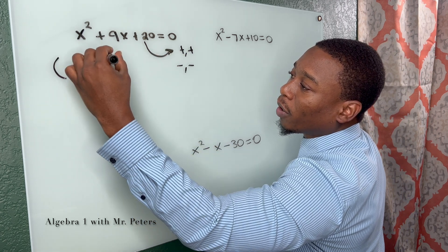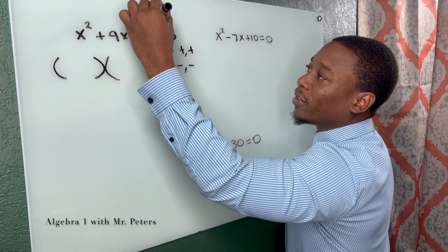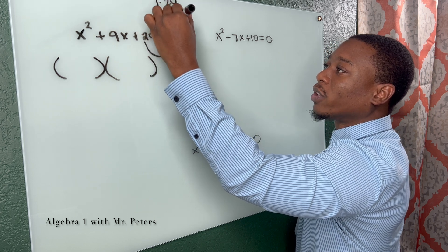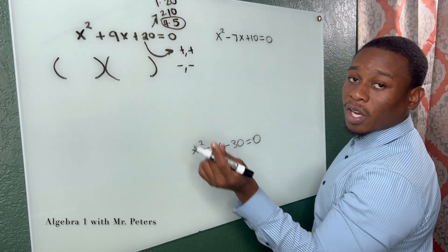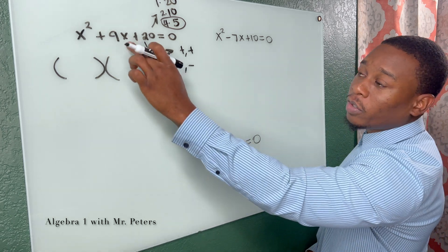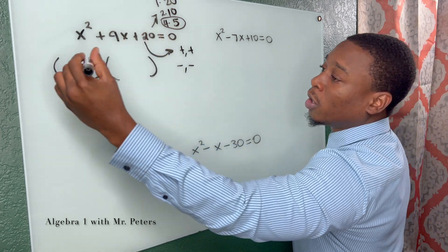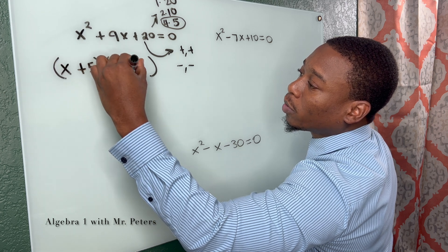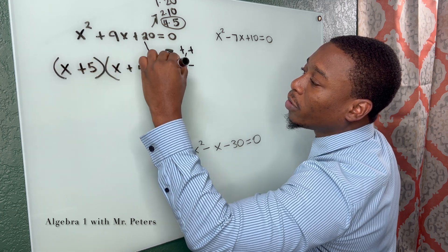Now to know whether it's positive or negative, we can look at our middle term. Because this is positive, we know both of our factors have to be positive to get a positive answer when we add and get a positive answer when we multiply. So when I break this down, we know my factors: one times 20, two times 10, four times five. Only this combination when you add gives you this 9x in the middle. So as a result, I have x plus five, x plus four, and both of these are equal to zero.